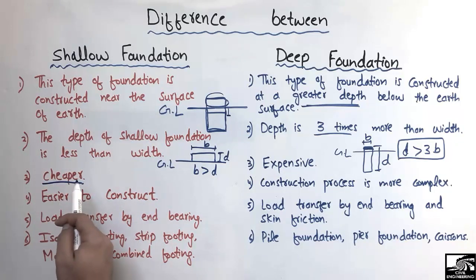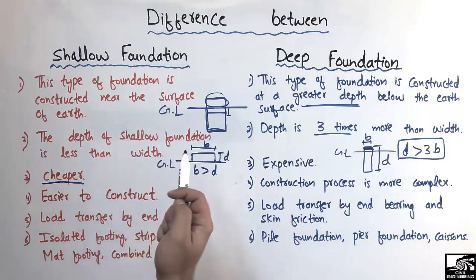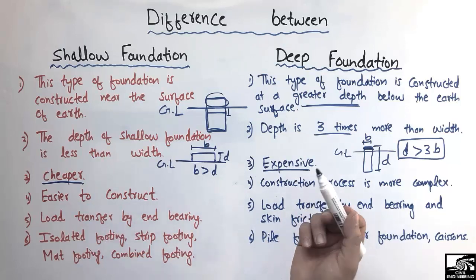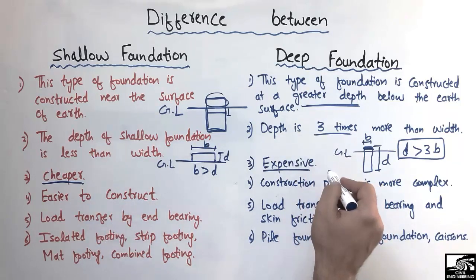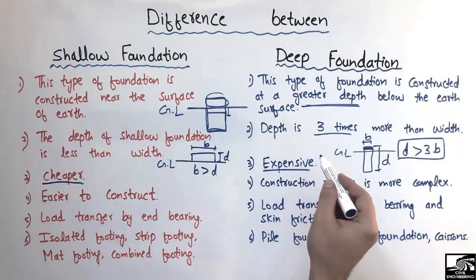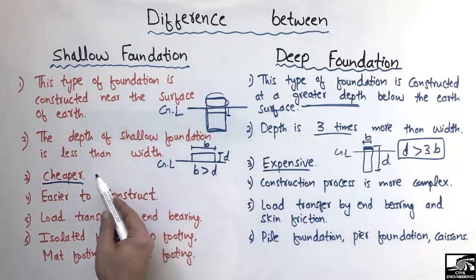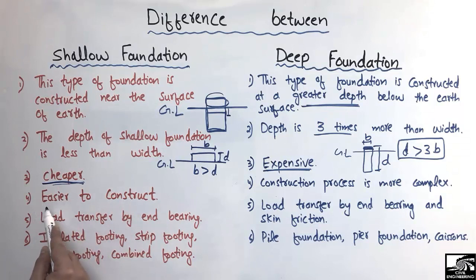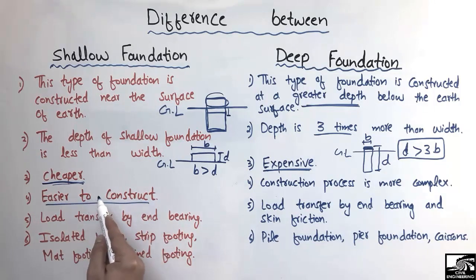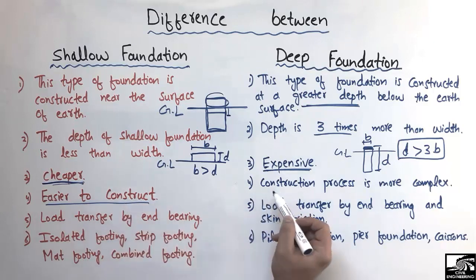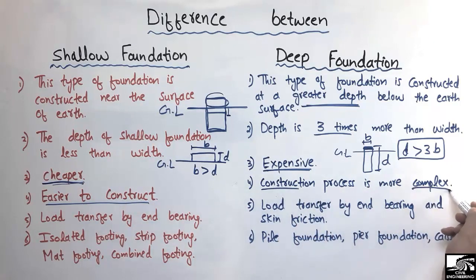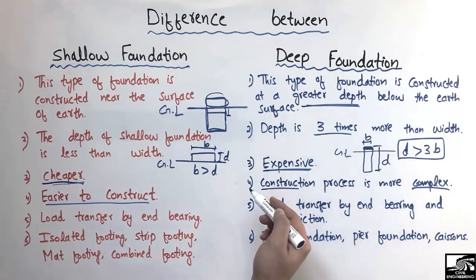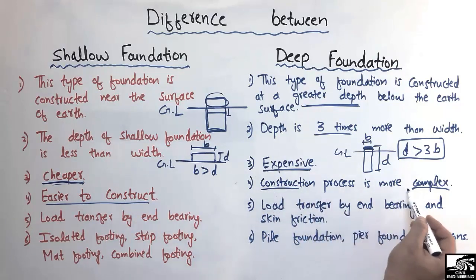The third difference is cost: the shallow foundation is generally cheaper because the depth is small and there is no boring inside the earth. The deep foundation is expensive because too much manpower and machinery is needed to make bores and piles at greater depth. The fourth difference is ease of construction: shallow foundation is easier to construct with less machinery and manpower, while deep foundation construction is more complex — you have to make bores, place reinforcement, and then pour concrete.